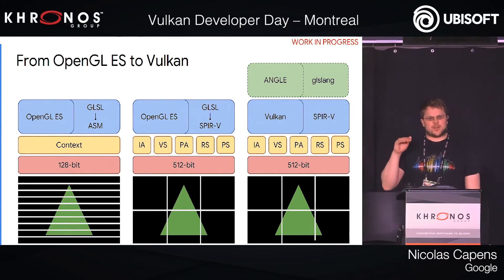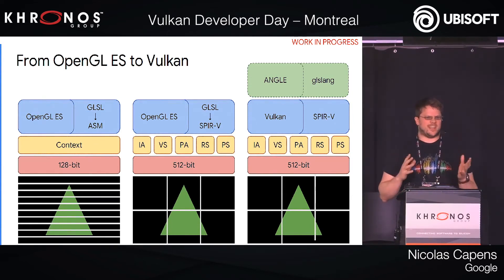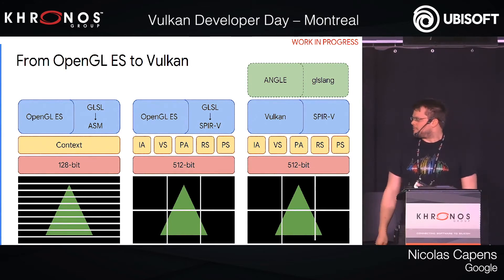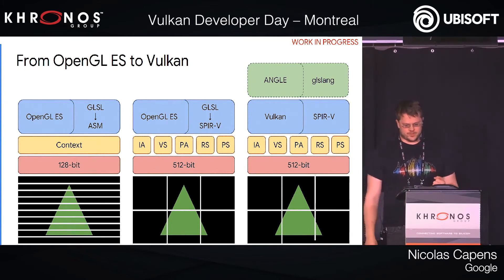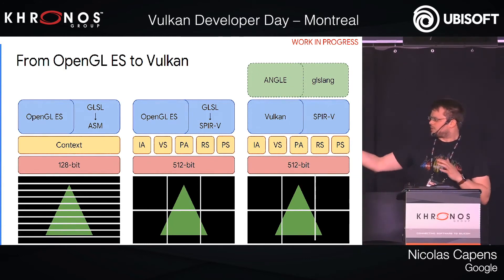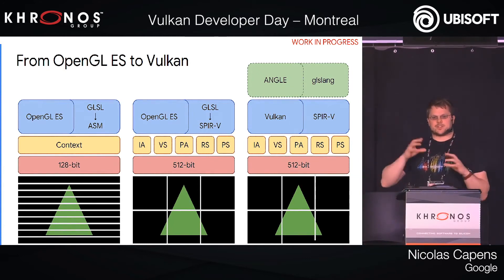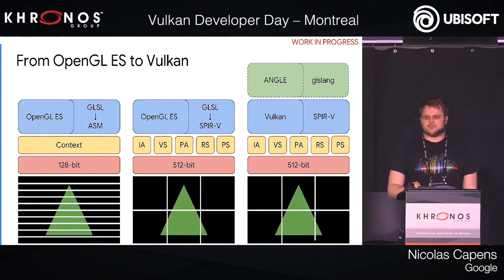We currently rasterize by doing scanlines and splitting these between different CPU cores, which has worked reasonably well for up to four to eight cores. But we want to do tile-based rendering to make it more efficient and to make better use of the CPU's cache. It's important to see that we can move from the current to the new architecture in different stages to mitigate some of the risk. ANGLE for Vulkan is not entirely ready yet, so this can evolve in parts.